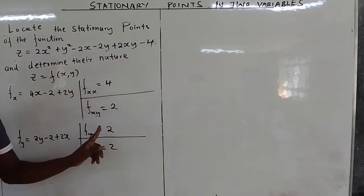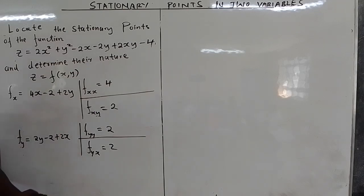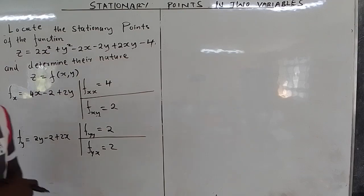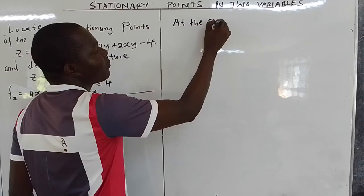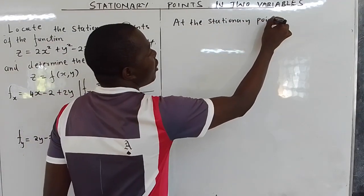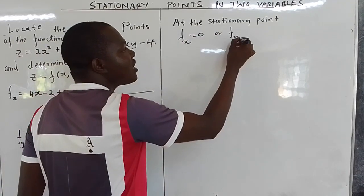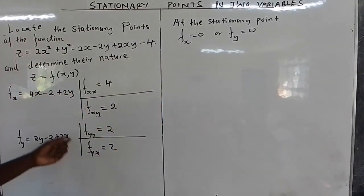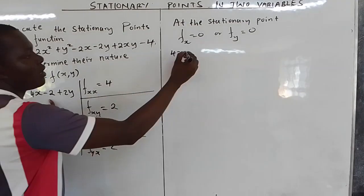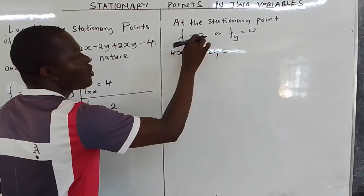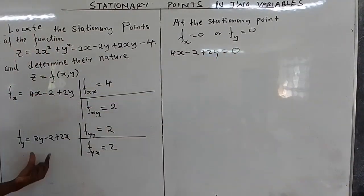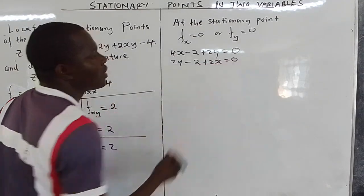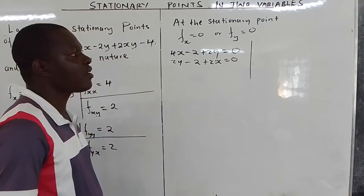We now have all six partial derivatives. Notice the highest exponent is 1, meaning the equations are only linear. This means there is only one stationary point. At the stationary point, both ∂z/∂x and ∂z/∂y equal 0. Substituting: ∂z/∂x gives 4x minus 2 plus 2y equals 0, and ∂z/∂y gives 2y minus 2 plus 2x equals 0.